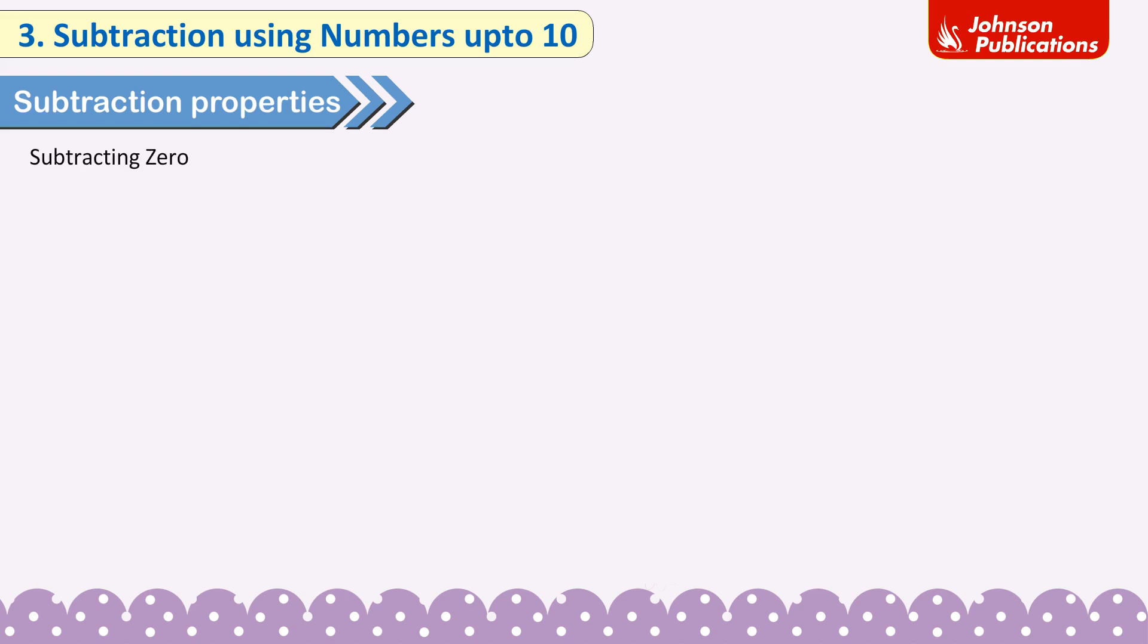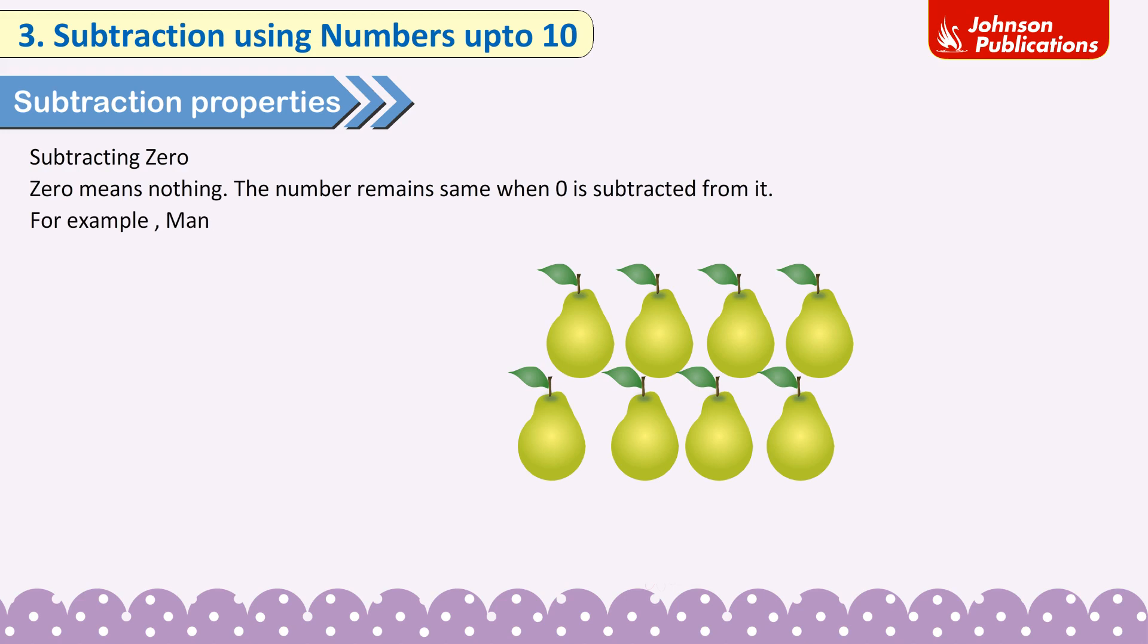Subtracting 0. Zero means nothing. The number remains the same when 0 is subtracted from it. For example, Manisha had 8 pears. She gave none to her sister. How many pears are left with Manisha? Manisha still has 8 pears with her.